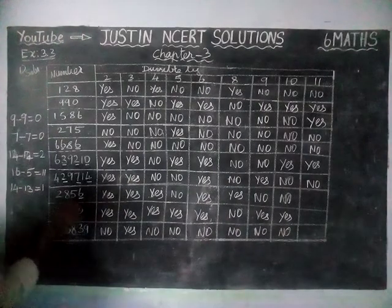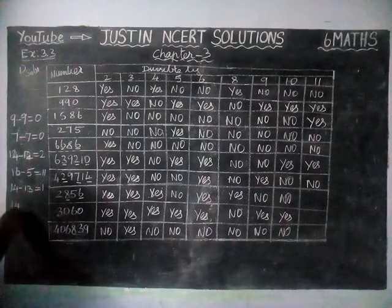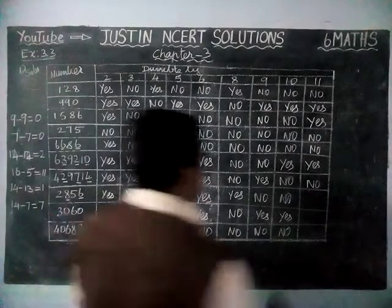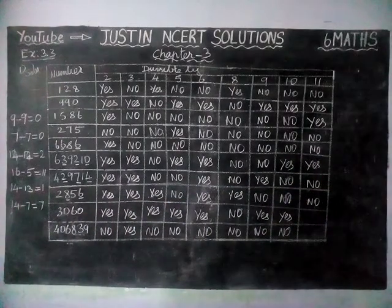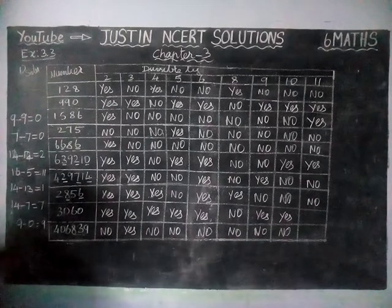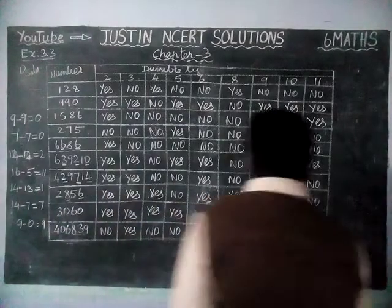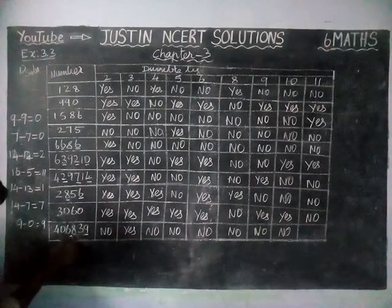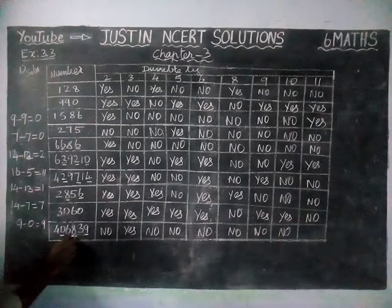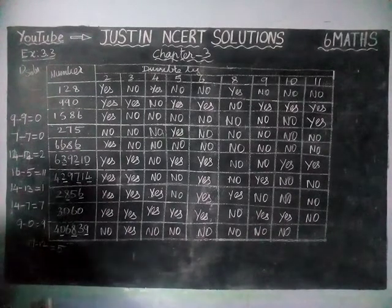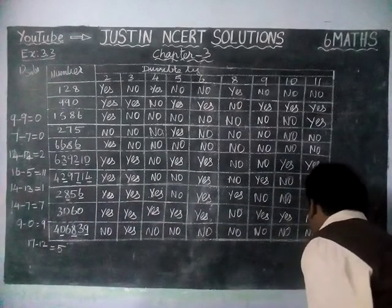Next: odd digits 6 plus 8 is 14; even digits 5 plus 2 is 7; difference is 7 — not divisible by 11, so this number is not divisible by 11. Next: odd digits 0 plus 0 is 0; even digits 6 plus 3 is 9; 9 minus 0 is 9 — not divisible by 11, so no. Last number: odd digits 9 plus 8 plus 0 is 17; even digits 3 plus 6 is 9, 9 plus 3 is 12; 17 minus 12 is 5 — 5 is not divisible by 11, so that number is not divisible by 11.